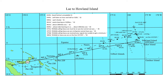At 0747 local, she reported: 'KHAQQ calling Itasca. We are circling but cannot hear you. Go ahead on 7500 with a long count either now or on the scheduled time on half hour.' This was the ETA for Howland revised after calculating the sun line. Given the limited view from the aircraft, it made sense to fly a circle to thoroughly visually check the area, but with an accurate sun line there was no point in circling and drifting downwind or doing a square search. She asked for Itasca to send a signal on 7500 kilocycles, which they did.